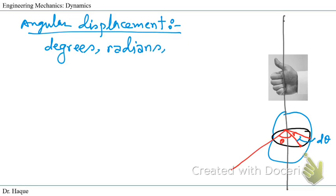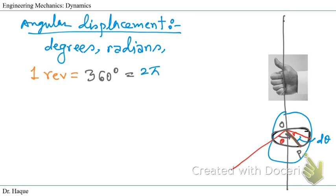The relationship between units: one revolution means the length OP, which is r, makes a complete loop — a 360-degree rotation. So one revolution equals 360 degrees, which equals 2π radians. Since the motion of this body is about a fixed axis — the x–x′ axis — the direction of dθ is determined by the right-hand rule.